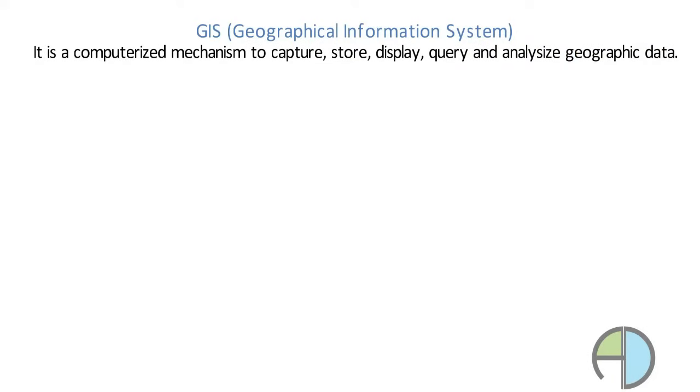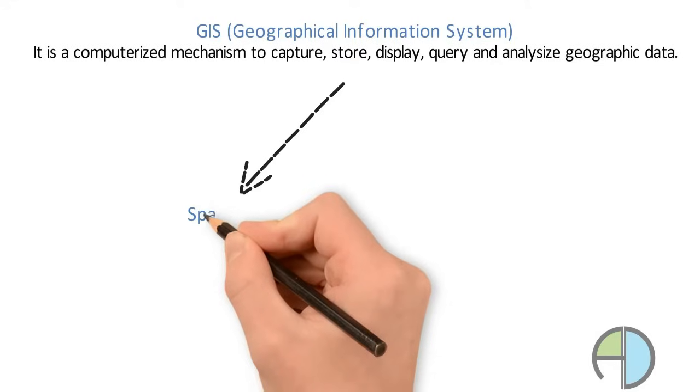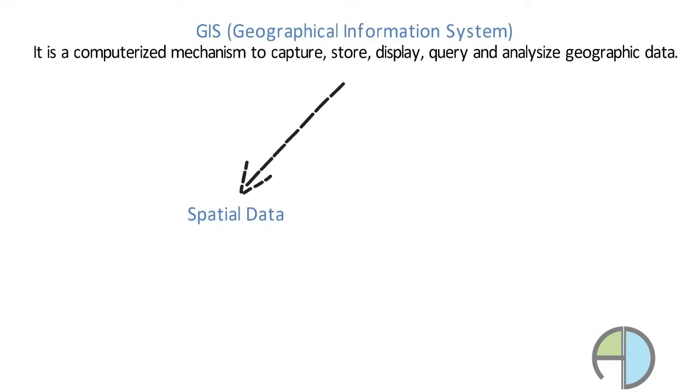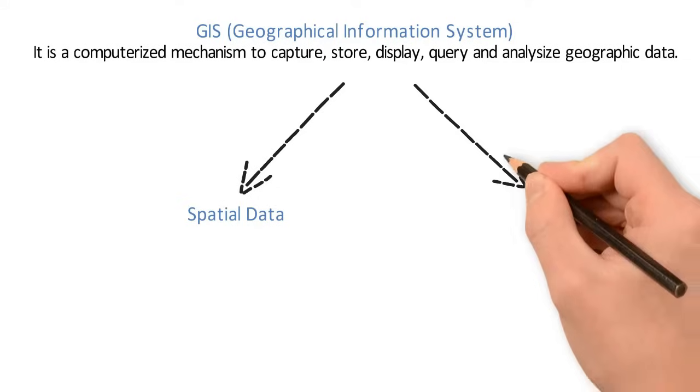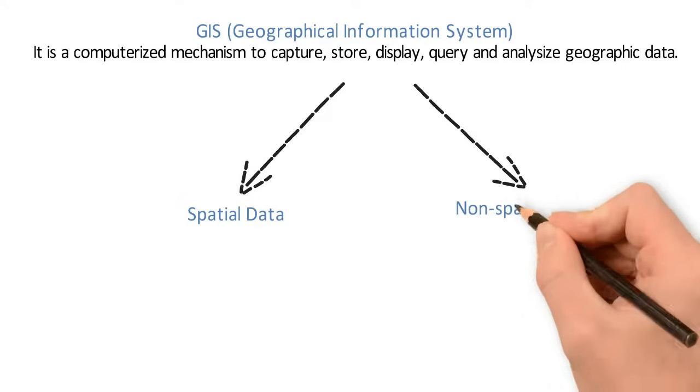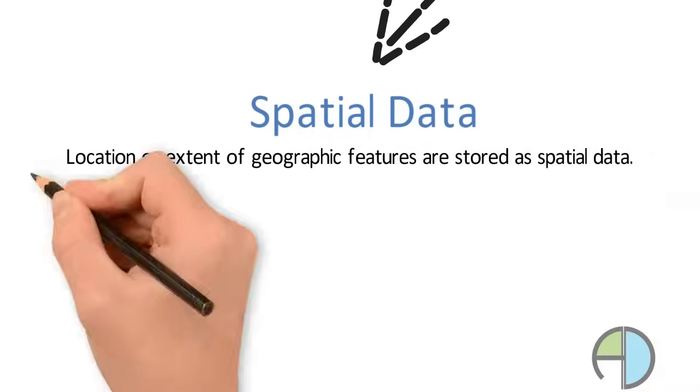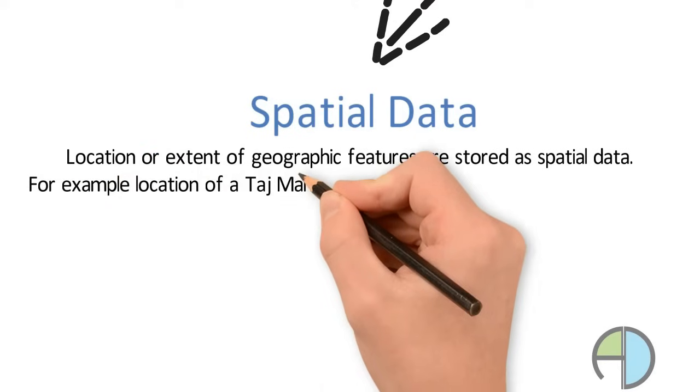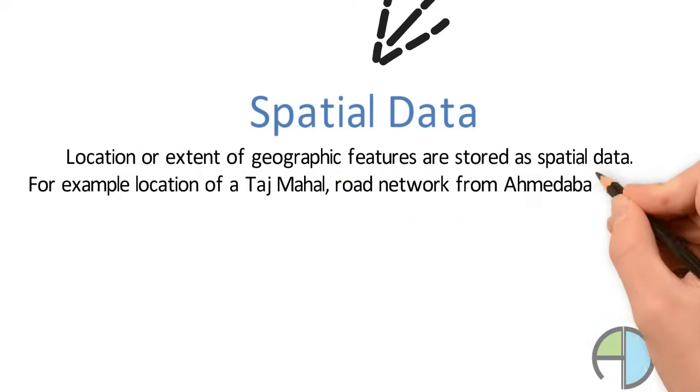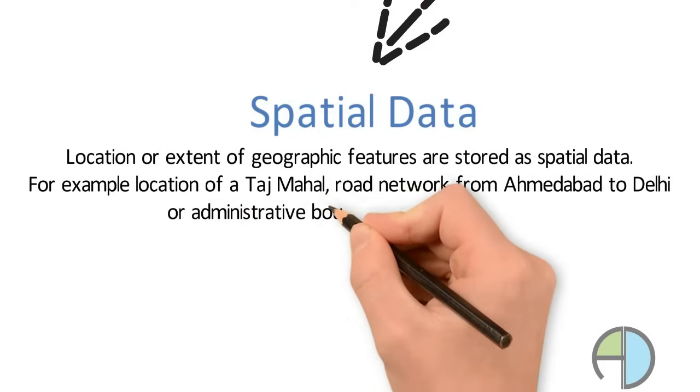There are two data types involved in GIS system: spatial data and non-spatial data. Let us understand spatial data in more detail. Location or extent of geographic features are stored as spatial data. For example, location of Taj Mahal or a road network from Ahmedabad to Delhi or administrative boundary of any state.